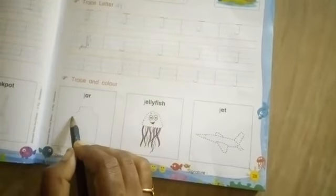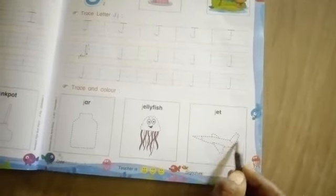Next trace and color jar, jellyfish, jet. Join the dots, color them. You can use any color you like.